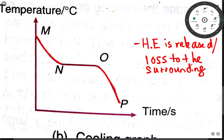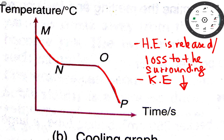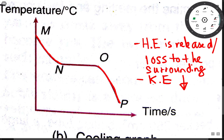So when heat energy is lost to the surrounding, what happens to the kinetic energy of the particles? It decreases, so the particles will move slower.